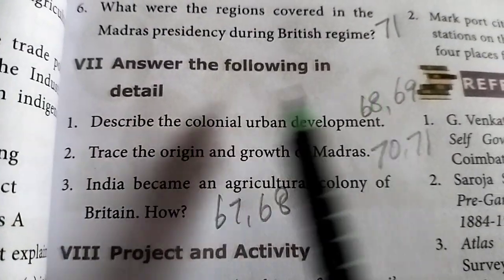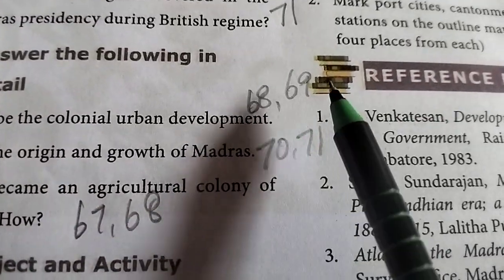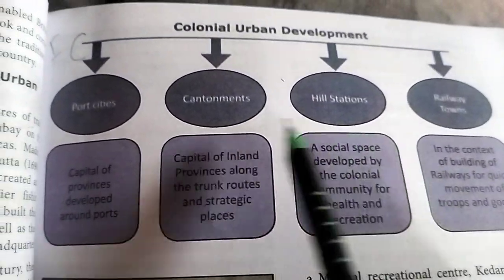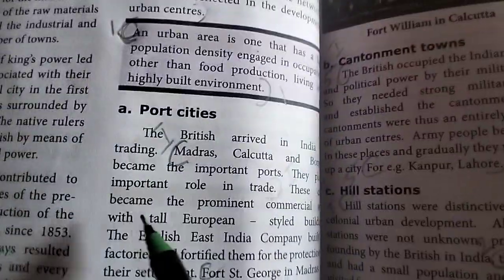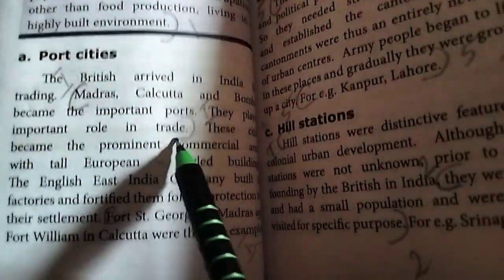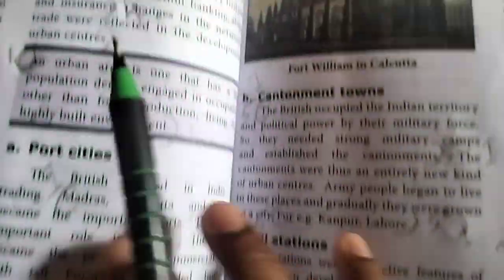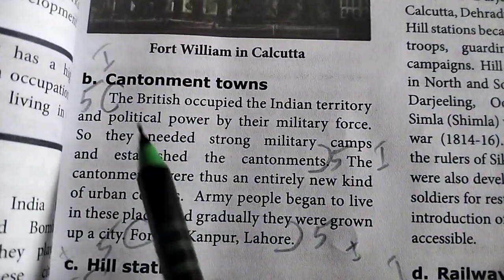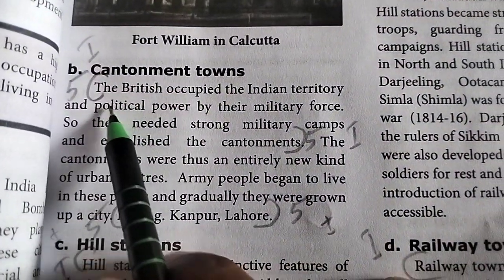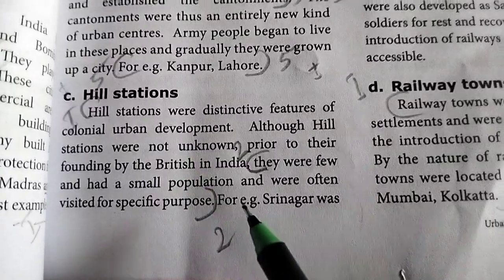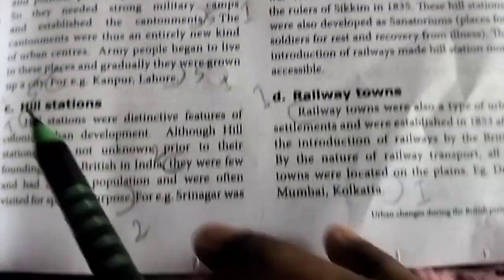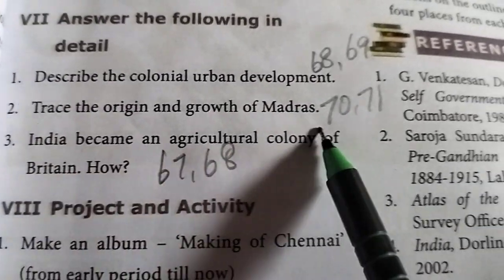Answer the following in detail. First question answer is pages 68 to 69. First, four cities. First question answer.